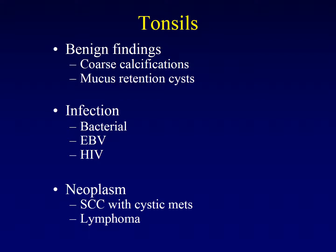The benign findings include coarse calcifications that are a result of chronic inflammation. Mucus retention cysts can occur on any mucosal surface and can certainly occur along the tonsils themselves. What makes these somewhat confusing, though, is the anatomy of the tonsils. Remember that the tonsils are not a solid mass, but instead have deep crypts where mucosa folds down in and then returns to the surface of the tonsil.